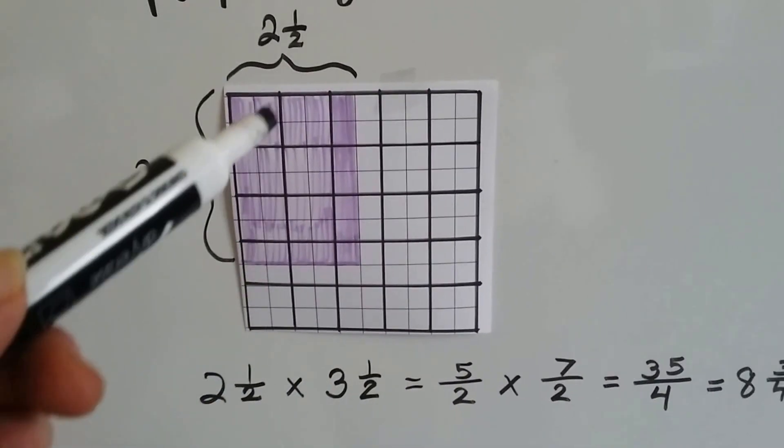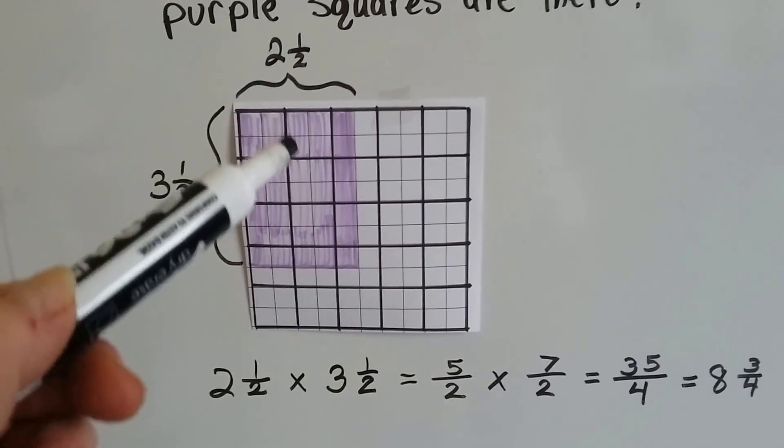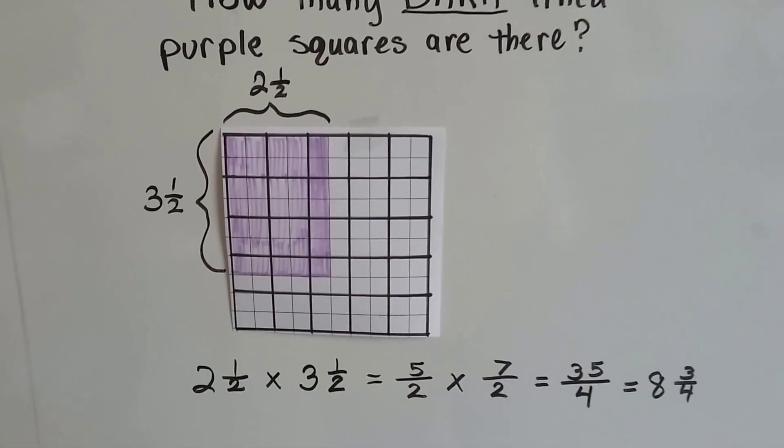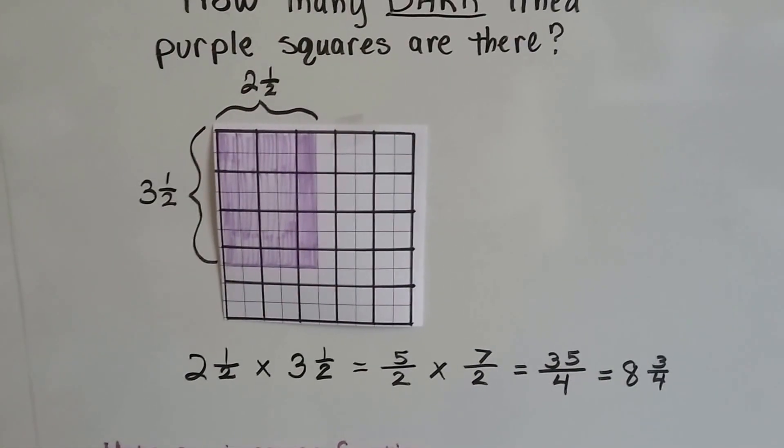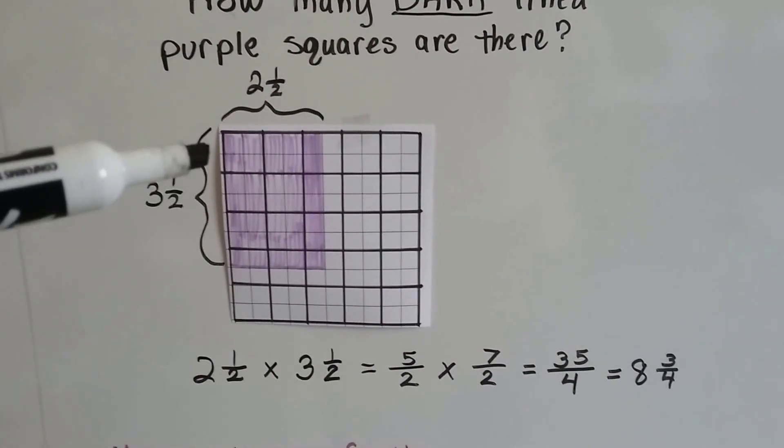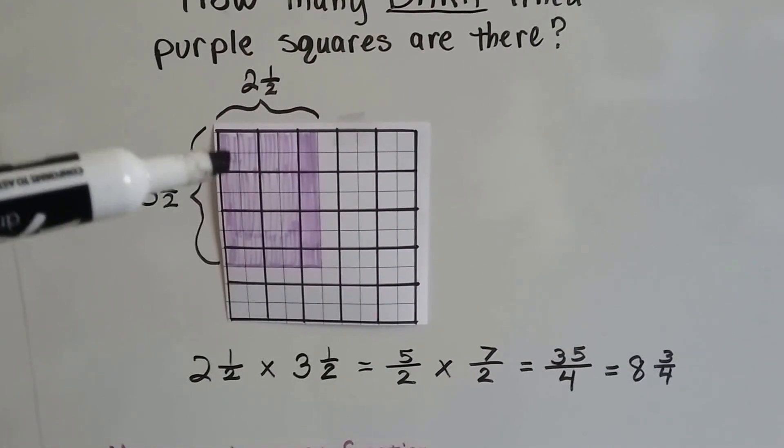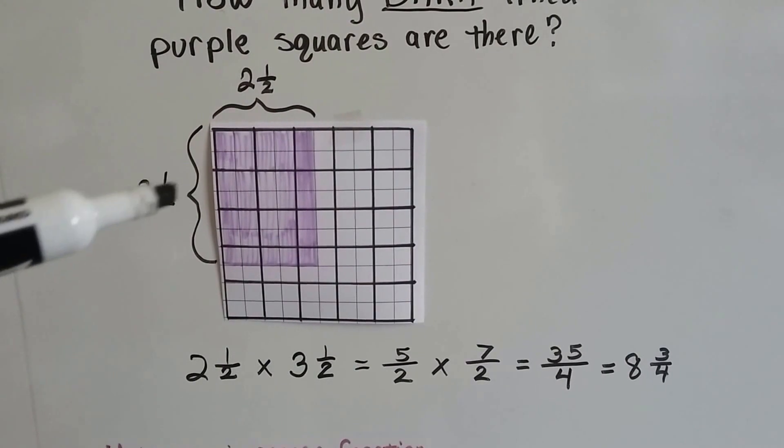So even though each square is split into 4, see the dark lines? How many dark lines? How many dark lined purple squares are there? So because we're going with the dark lines, we're going to ignore the little light lines in there.